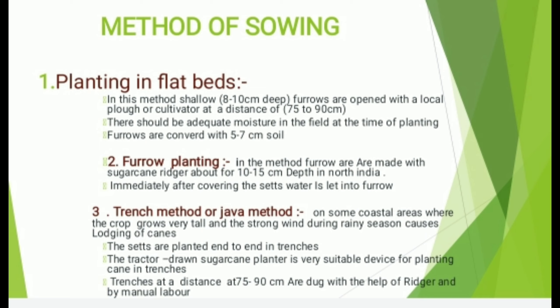Method of Sowing of Sugarcane — Planting in Flatbeds: Shallow 8 to 10 cm deep furrows are opened with a local plow and cultivator at a distance of 75 to 90 cm. There should be adequate moisture in the field at the time of planting. The furrows are covered with 5 to 7 cm of soil. Furrow Planting Method: Furrows are made about 10 to 15 cm deep in Northern India and about 20 cm in South India. Immediately after covering the sets, water is let into the furrows.